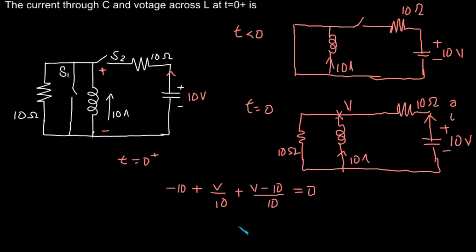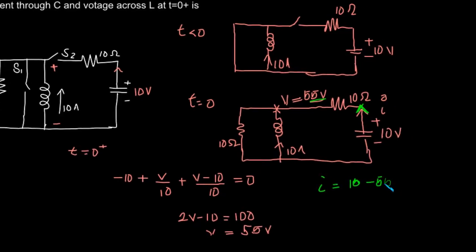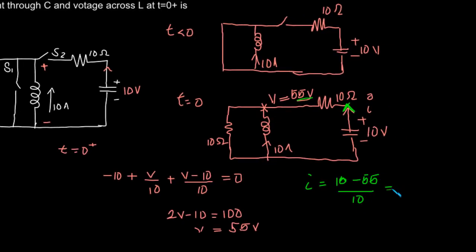Solving the KCL equation gives 2v minus 10 equal to 100, so v equals 110 by 2, which is 55 volts. We have found the potential as 55 volts. Now, with 55 volts at one end and 10 volts at the other, the current I will be 10 minus 55 by 10, that is minus 45 by 10, which equals minus 4.5 amperes.